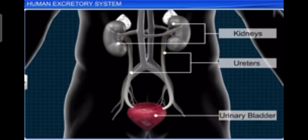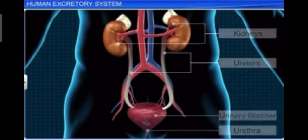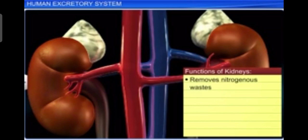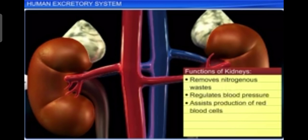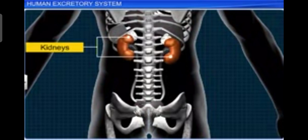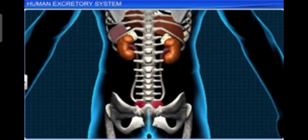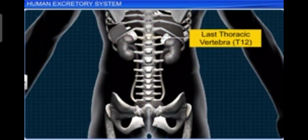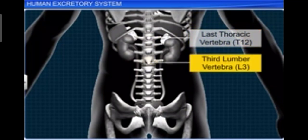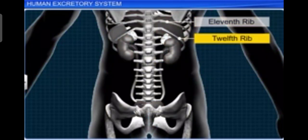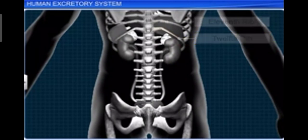Kidneys are reddish-brown, bean-shaped structures situated between the levels of the last thoracic vertebra (T12) and the third lumbar vertebra (L3), close to the dorsal inner wall of the abdominal cavity. Each kidney of an adult human measures 10 to 12 cm in length, 5 to 7 cm in width, and 2 to 3 cm in thickness, with an average weight of 120 to 170 grams.